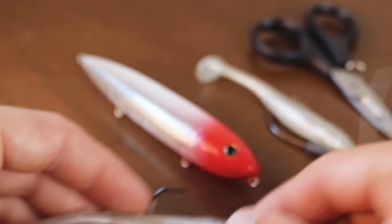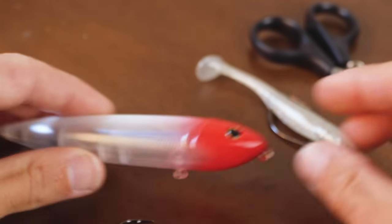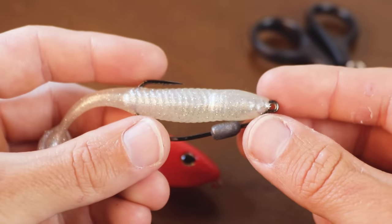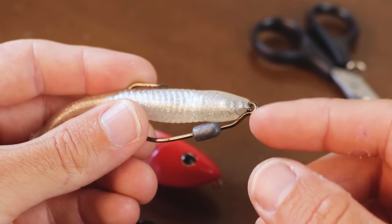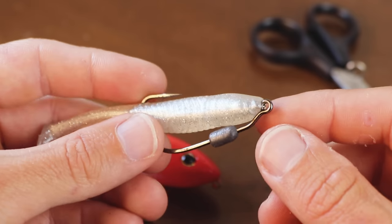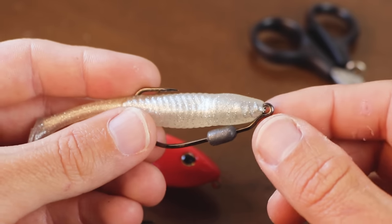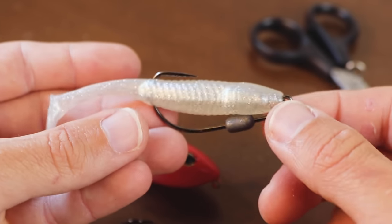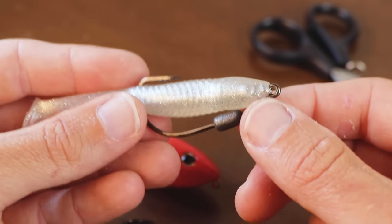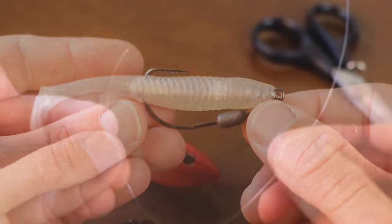Whether you're using paddle tails or topwaters or even weedless presentations, it doesn't matter as long as there's no split ring or extra swivel and it's a direct connection to the hook and you're looking to give a little bit of extra action to your jig, paddle tail, whatever it may be, this is the best knot for doing that.